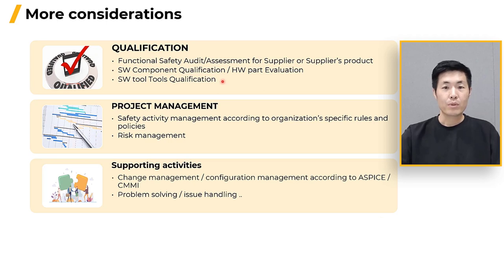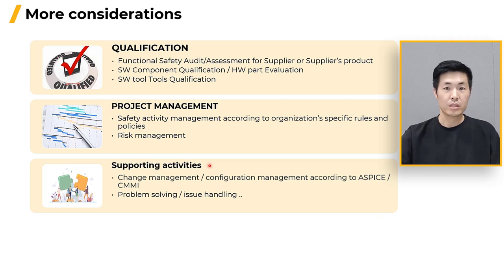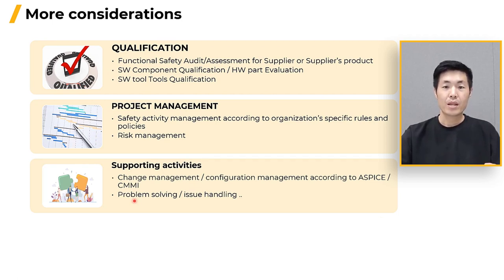Moreover, every project requires effective management, and functional safety projects are no exception. Safety management is crucial to proactively control risk based on organizational rules and policy. Lastly, there are certain yet important activities such as configuration management and problem management. Though their specific terms may vary depending on the standard, they play a vital role in maintaining the integrity of work products and effectively managing any problems that may arise throughout the project.